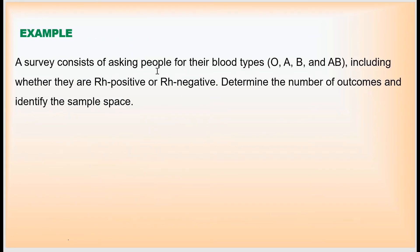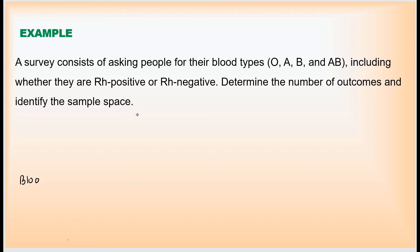Here is an example: A survey asks people for their blood types — O, A, B, and AB. Each blood type also has an RH factor, which can be positive or negative. We are asked to determine the number of outcomes and identify the sample space. We'll begin by making a tree diagram, starting with blood types.